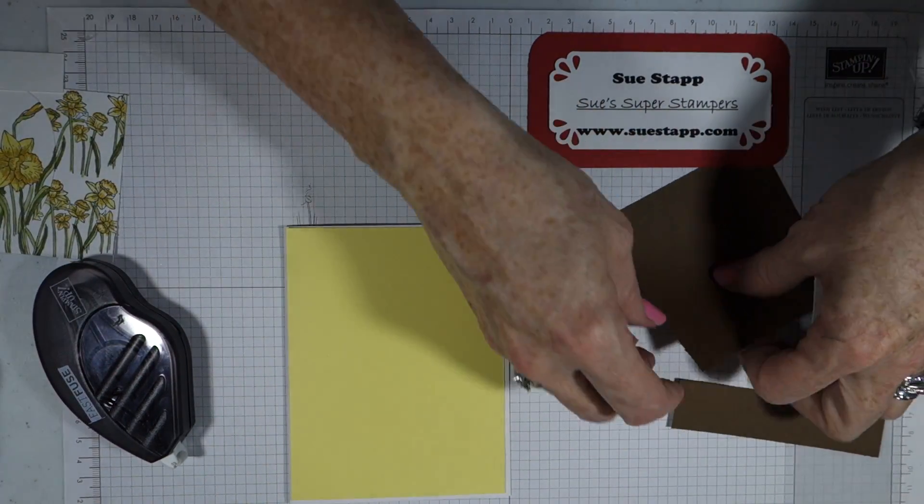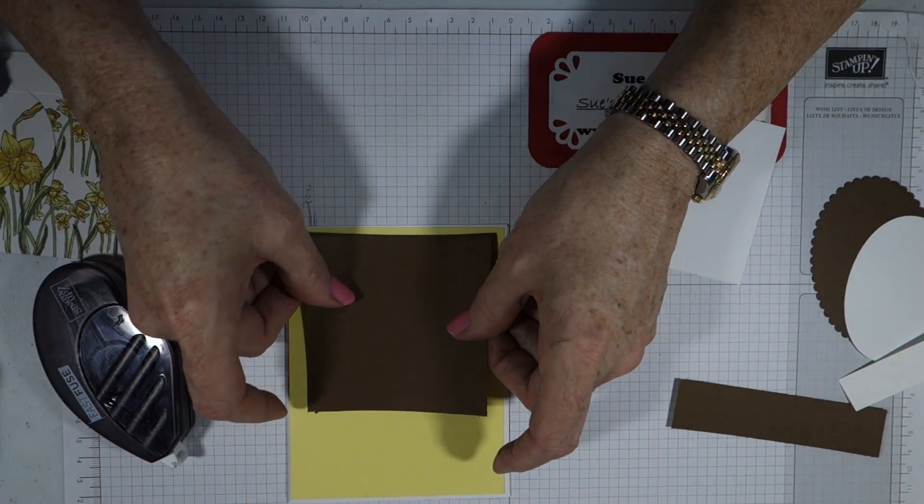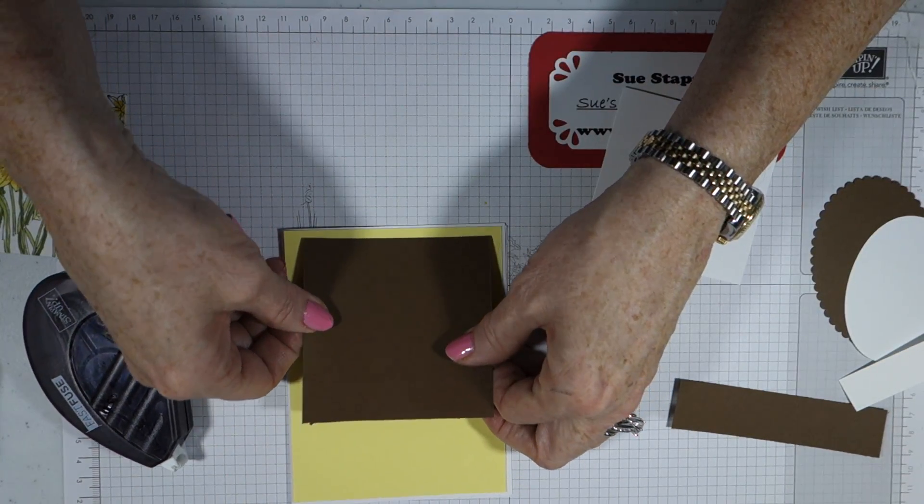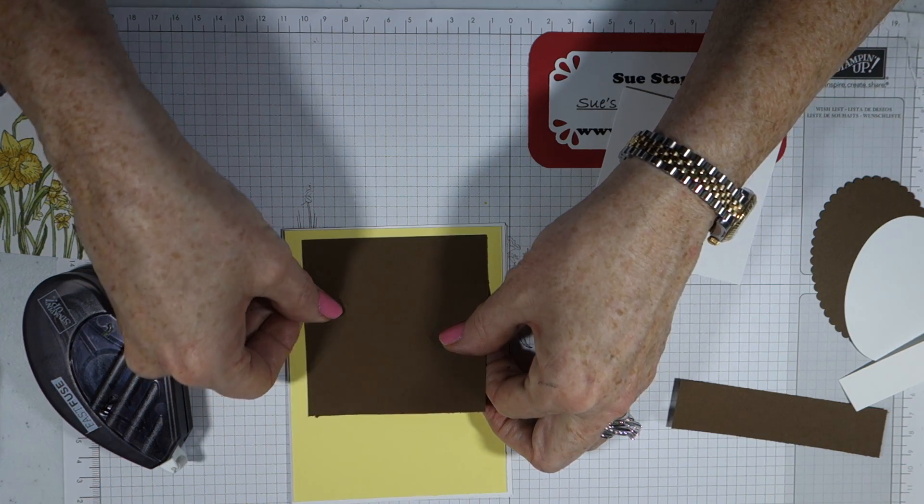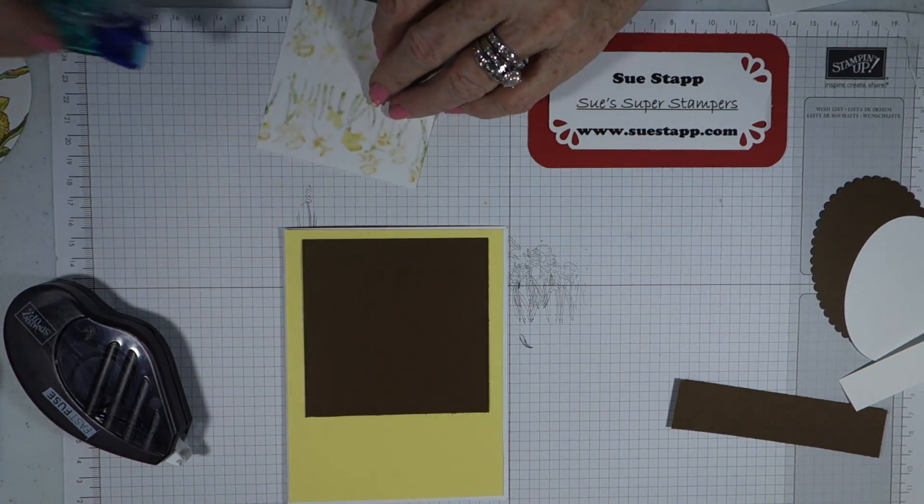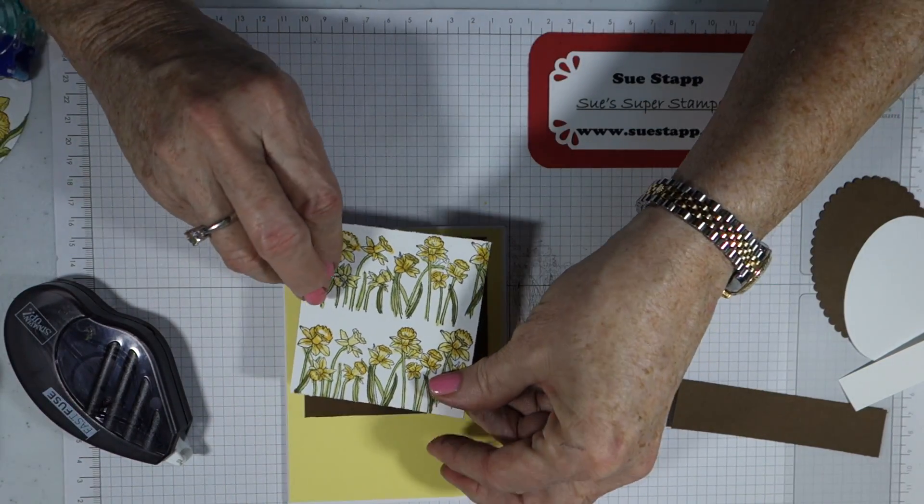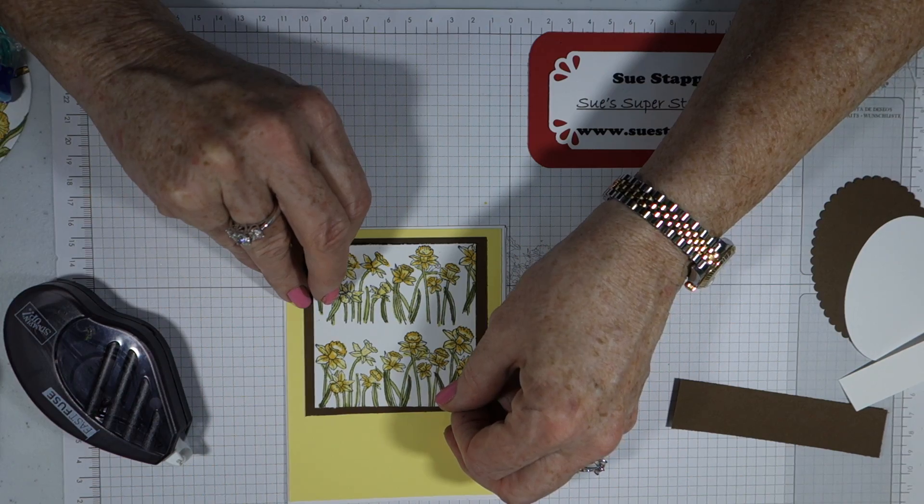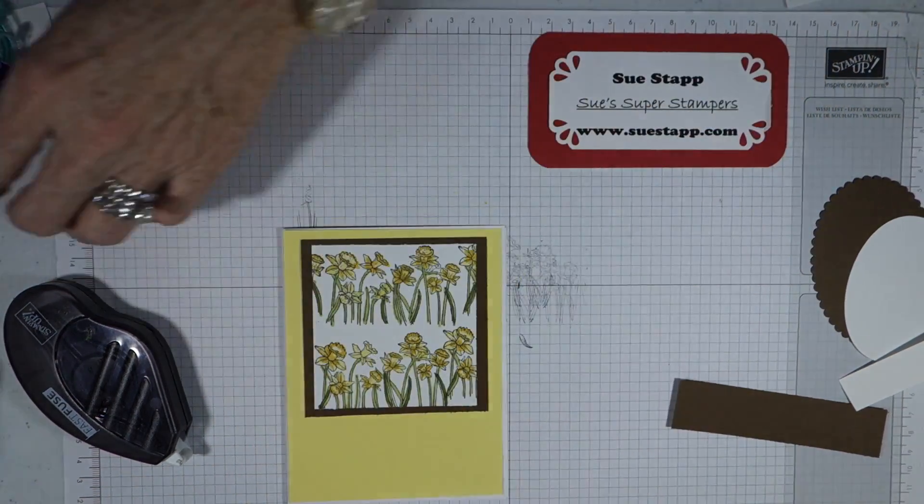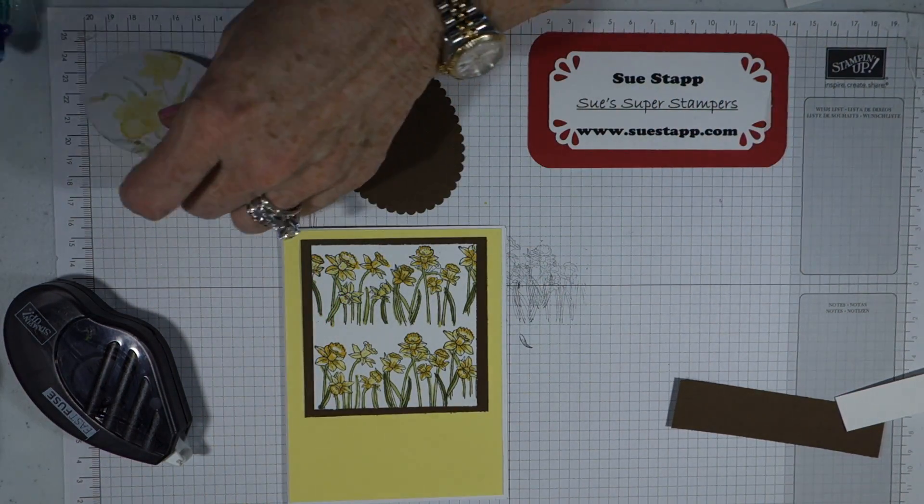And then the brown, we're going to adhere that on next. That will be up towards the top, and you want about the same amount of space on all three sides there. And then we're going to take our piece that we colored in and place that here on the center. And then we have our beautiful oval, and we're going to put that on the scalloped oval.